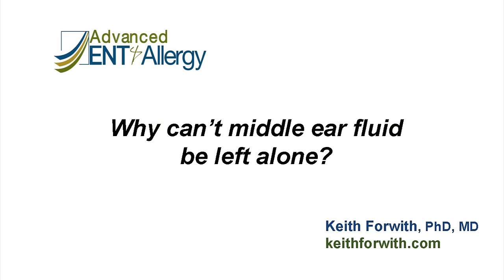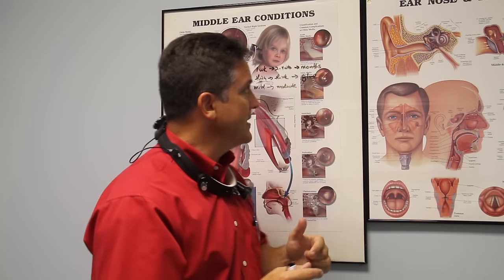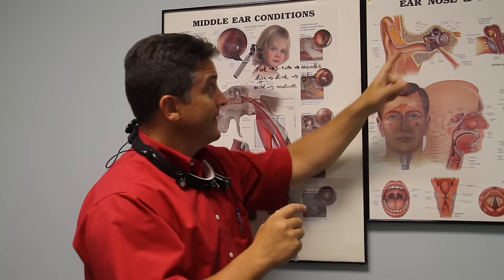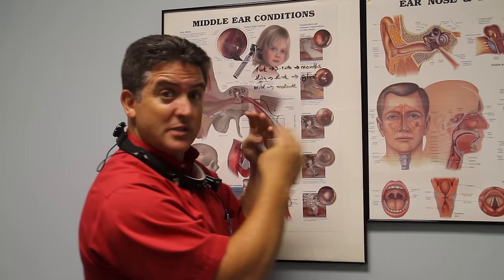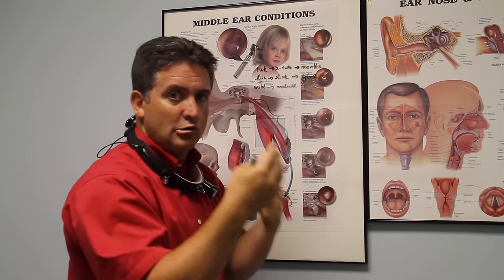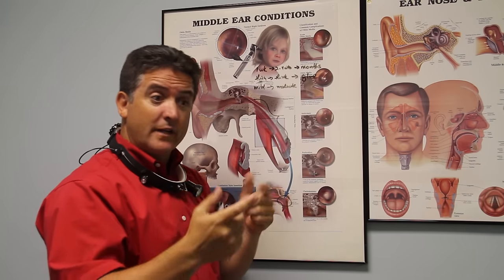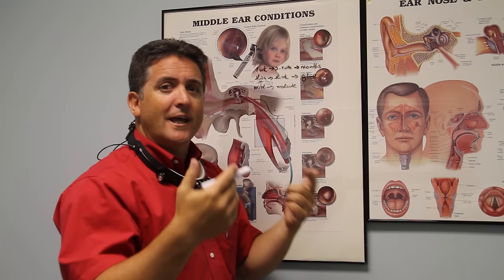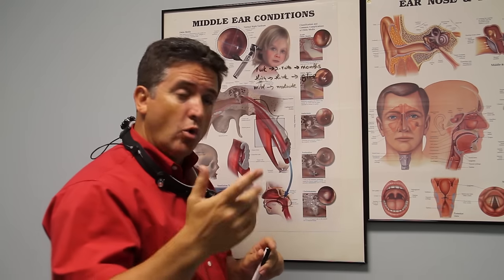Why can't a child or an adult just leave the fluid and maybe it goes away on its own? Well, inside the middle ear we have three hearing bones: the malleus, the incus, and the stapes. Those hearing bones were designed to live in an air-filled environment. When the eardrum vibrates from sound vibrations, those hearing bones vibrate. In fluid, those hearing bones can't vibrate properly, and so you get a hearing loss. For a small child, having months of hearing loss from fluid in the ear can affect their speech development, their behavior, their balance, development, walking, and that sort of thing.